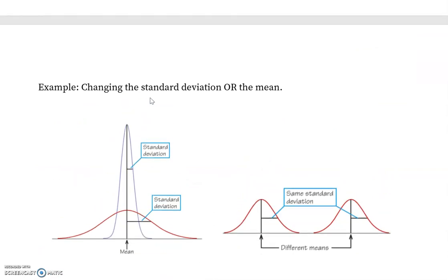Here are a couple of examples of just changing either the standard deviation or the mean. In the first case, we're keeping the mean the same, so basically where the peak is is in the same spot. However, we notice that the standard deviation for this taller looking curve is much smaller. Standard deviation means how spread out our data is.